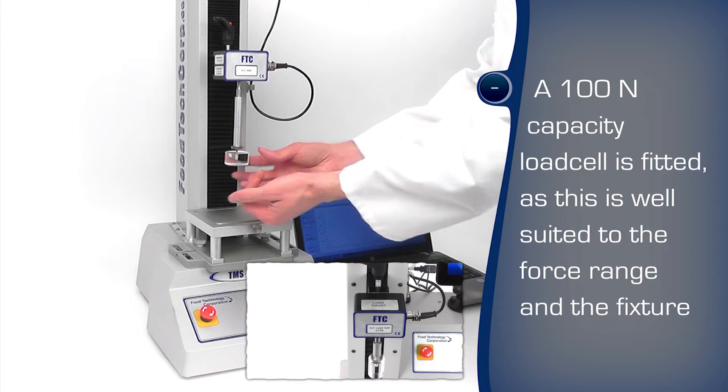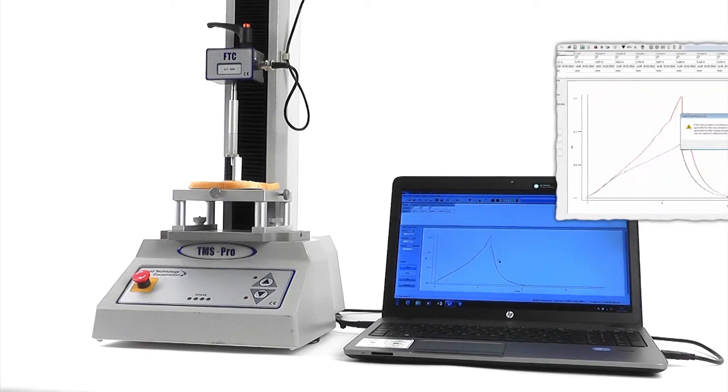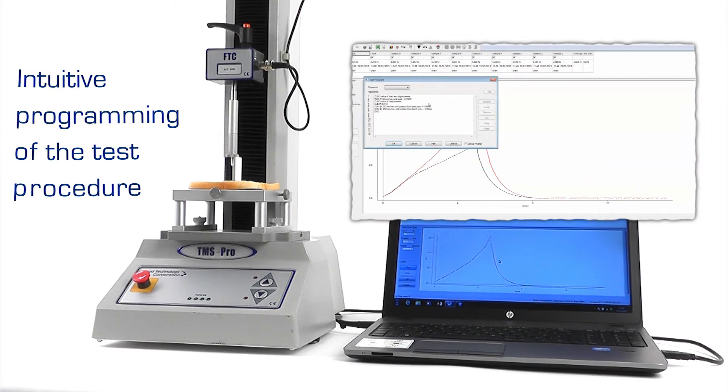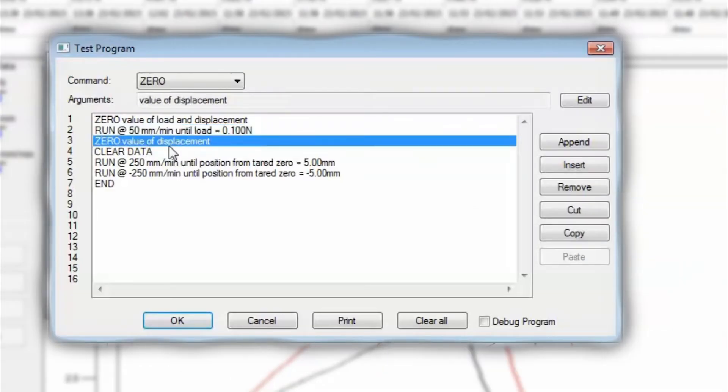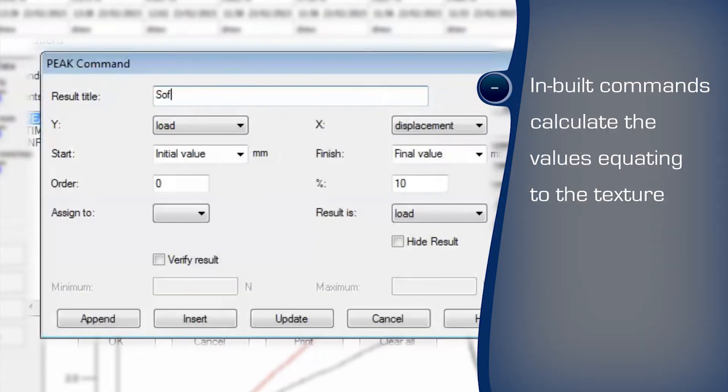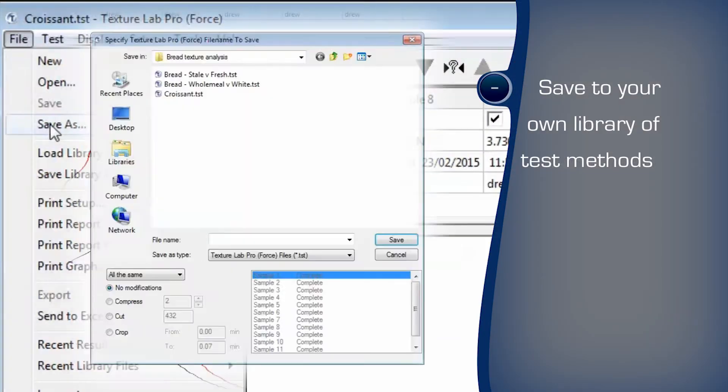A suitably rated load cell is used to maximize measurement accuracy. The automated test program is easily written with the familiar Windows-based environment. Commands are selected to perform the steps. The bread's firmness is calculated from the peak force. The program can be saved to a library and recalled for reuse.